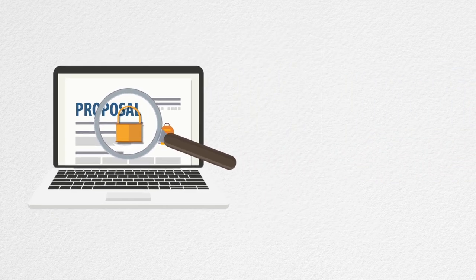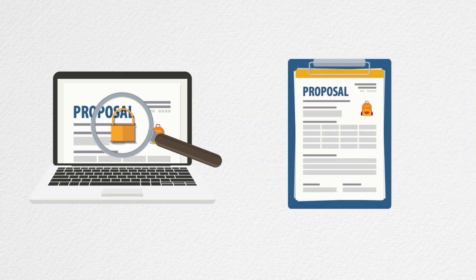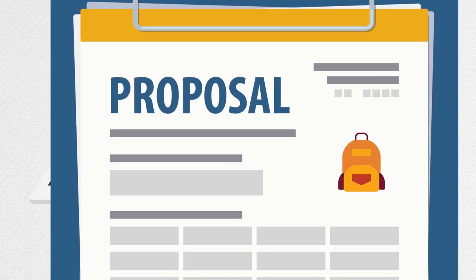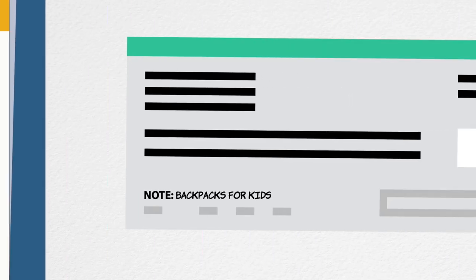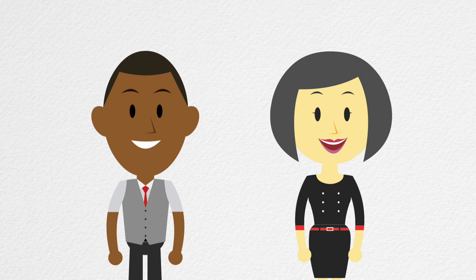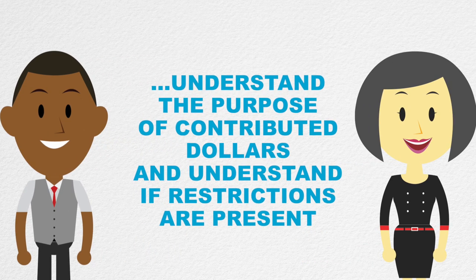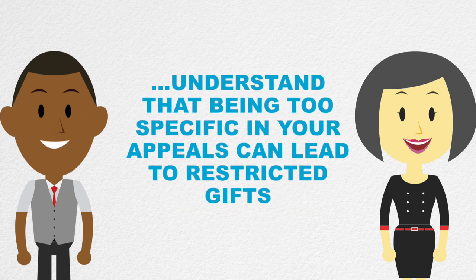Project or program grants are restricted for that purpose, so be aware of what you're asking for in your proposal. If you're asking specifically for donations for your Backpacks for Kids campaign, you may be putting restrictions on the funding. That's because anyone responding to the appeal thinks their donation is going to Backpacks for Kids, so that money is now restricted for that purpose. Be certain that managers and donors understand the purpose of contributed dollars, and be certain that staff charged with fundraising understand that being too specific in your appeals can lead to restricted gifts.